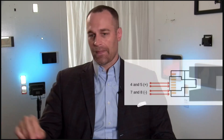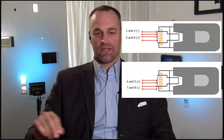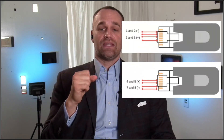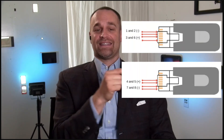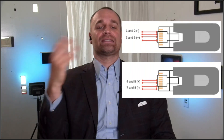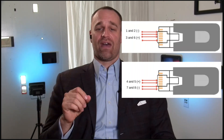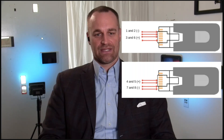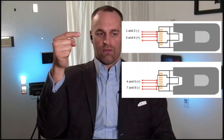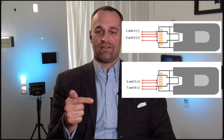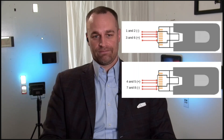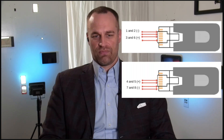Mode A simply means that you have power on pairs one and two, and three and six. Mode B simply means you have power in pairs four, five, and seven and eight. Mode AB means you have power in all four pairs at the same time. So mode A is on pins one, two, three, and six; mode B is on pins four, five, seven, and eight; and mode AB is both. Mode AB is also known as four pair POE.